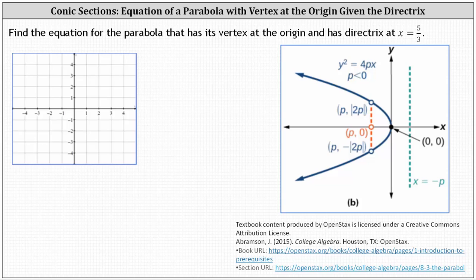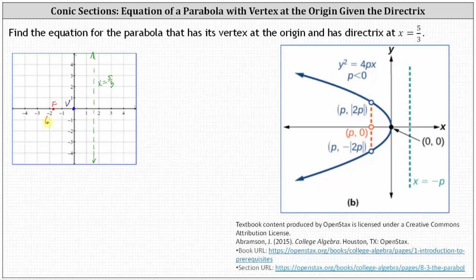Next, we have the vertex at the origin, but now the directrix is the vertical line x equals 5 thirds. Recall 5 thirds is approximately 1.67, and therefore the directrix is approximately here. Because the directrix is 5 thirds units to the right of the vertex, we know the focus must be 5 thirds units to the left of the vertex on the x-axis, and therefore the focus is the point negative 5 thirds comma 0.